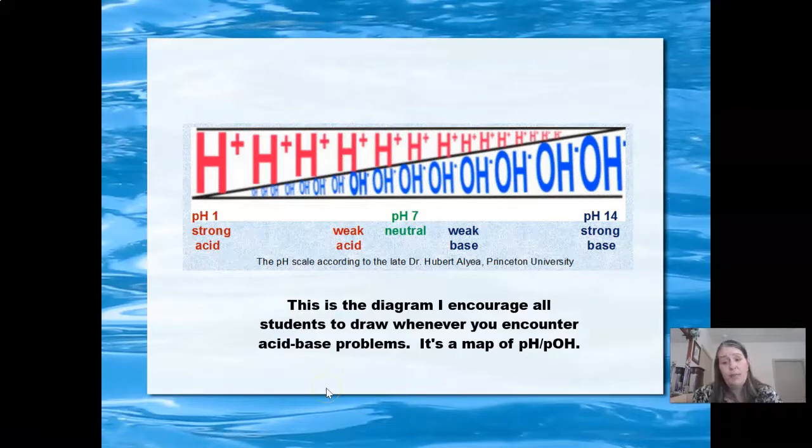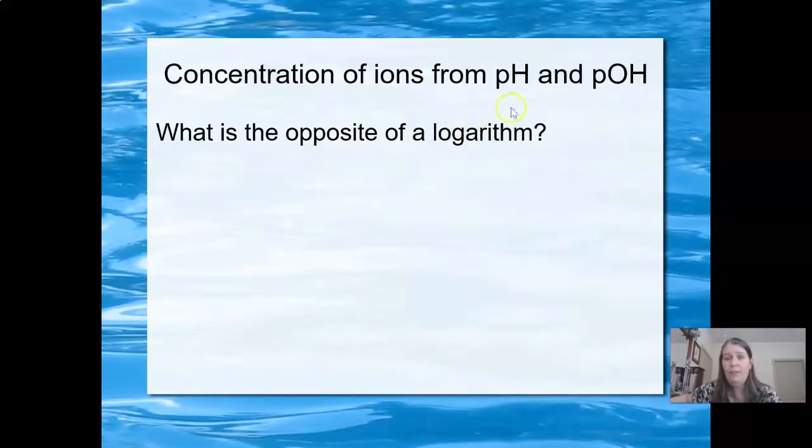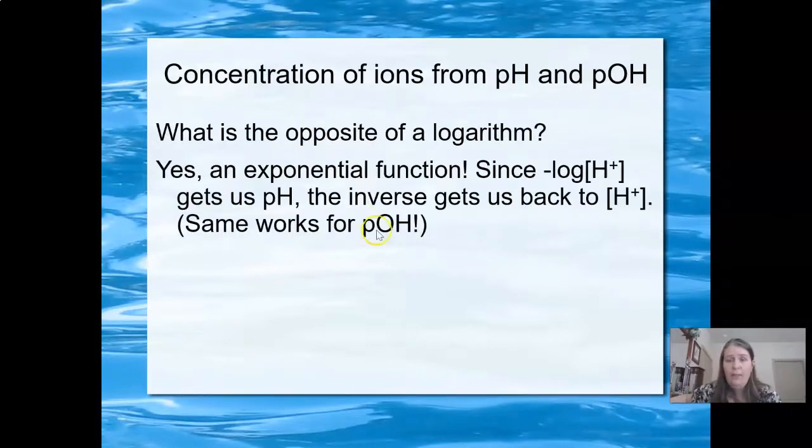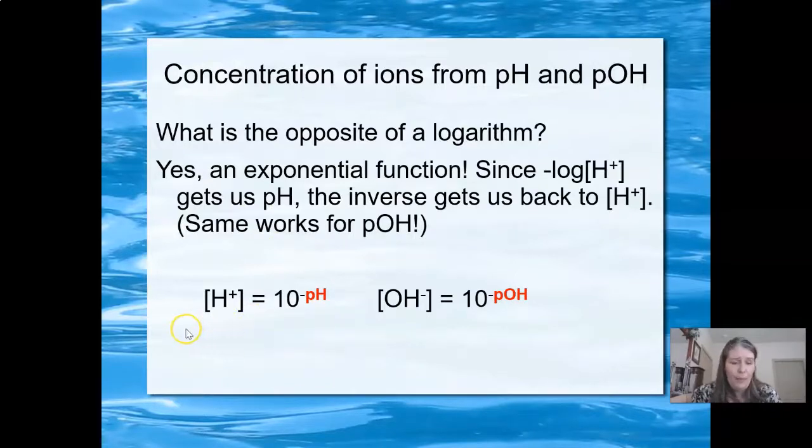So this is the relationship between acids, bases, pH and pOH. pH is minus log of the H+ concentration. pOH is minus log of the OH- concentration. And that does mean that there is a way to go from the ions to pH and from the pH to the ions. The opposite of a log is an exponent. So since minus log of H+ gets us pH, the inverse gets us back to H+. So we should always remember these equations too. I like to write them on my little diagram. I like to write that pH is minus log of H+ and H+ is 10 to the minus pH. And I can get to the OH- by using 10 to the minus pOH.